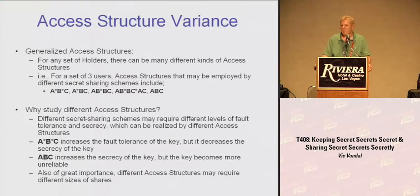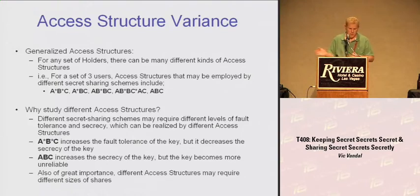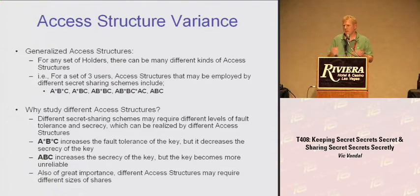Why would we care about different access structures? Because different secret sharing schemes may require different levels of fault tolerance and secrecy, which you can realize by using different access structures. If A or B or C can recover the information, that increases fault tolerance — but it decreases secrecy because it can be fully compromised by any one of those three people. If all three are required, secrecy increases but reliability decreases, because if any one piece goes down, you've lost an integral part of that shared secret.